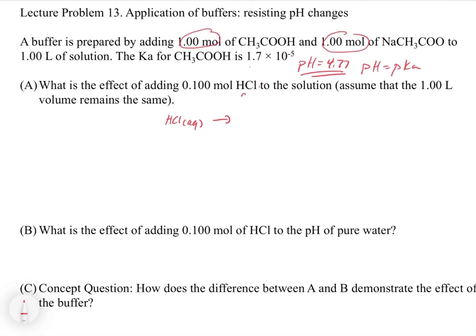HCl is a strong acid, and in this solution we have three things: acetic acid, acetate, and water. When we add HCl — a strong acid — the question is which of these three things it's going to react with. A strong acid is going to seek out and react with the strongest base in the solution.